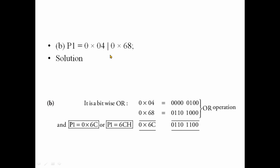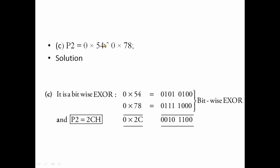The next operator is OR. The result is 0x46 or 0x68 — this is bitwise OR. Next, the operator is XOR: 0x54 XOR 0x78. In C, this is hexadecimal. 0x54 XOR 0x78 bitwise — different bits give 1, same bits give 0 — result is 0x2C.